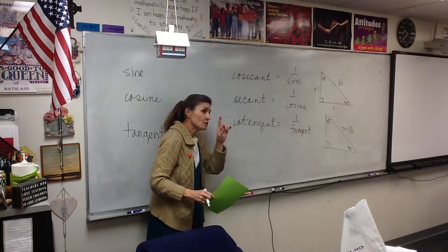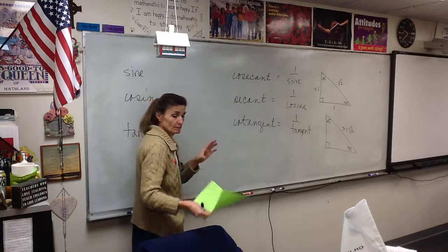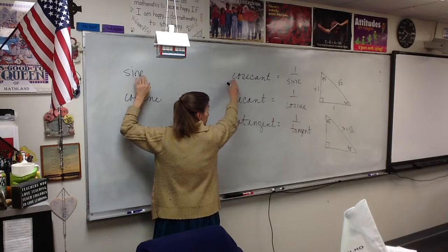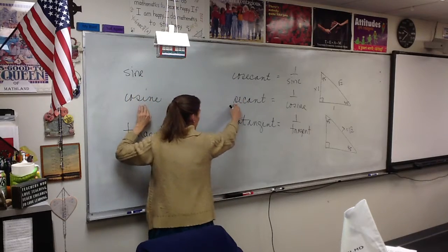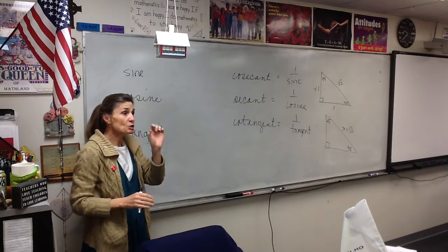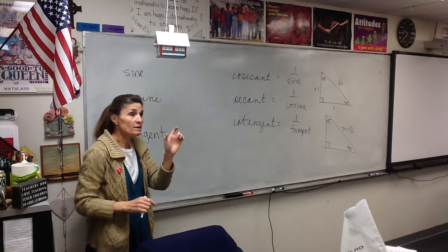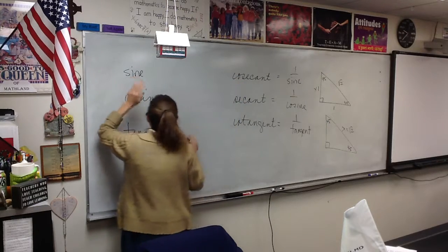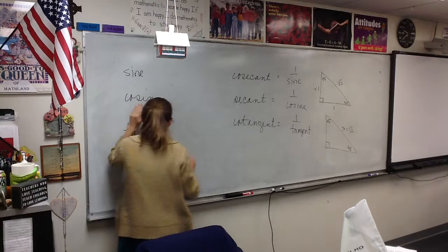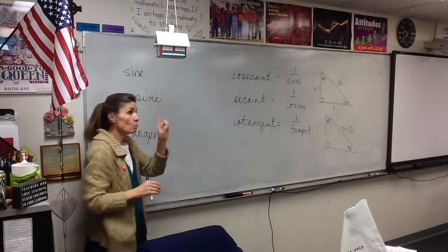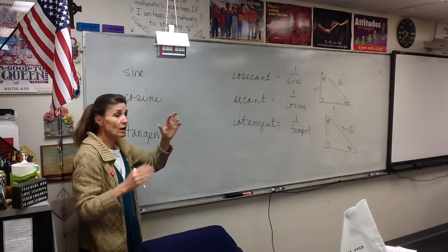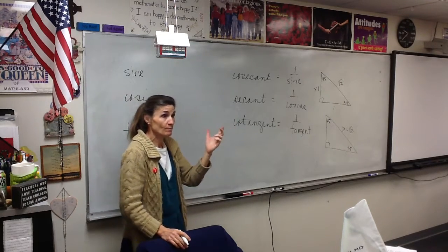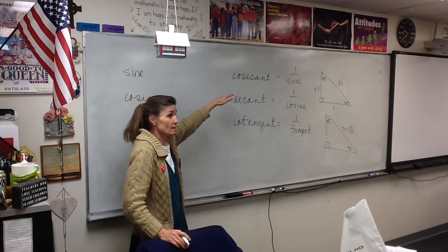Now, notice that in the pairs, within each pair, sine, cosecant. These are reciprocals. These are reciprocals. These are reciprocals. Within each pair, there is only one co. Sine, cosecant. Cosine, secant. Tan, cotangent. Only one pair. I'm trying to help you memorize these. Only one in each pair is a co. So sine is paired with cosecant. Reciprocals.